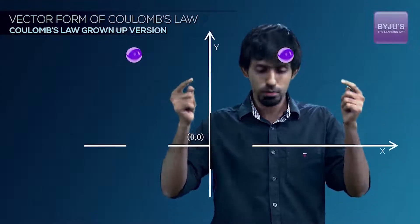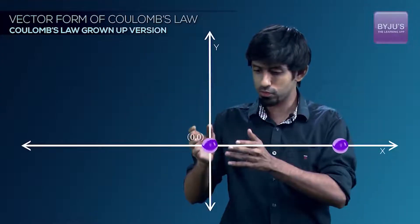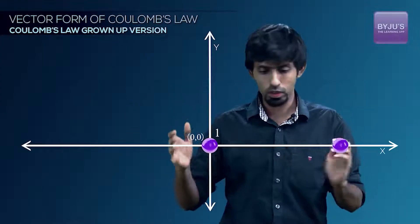Let's take two charges. Now we can align them however we want to, without loss of generality. Let's keep them on the x-axis. Let's also put one of them on the origin. Let's name them 1 and 2.